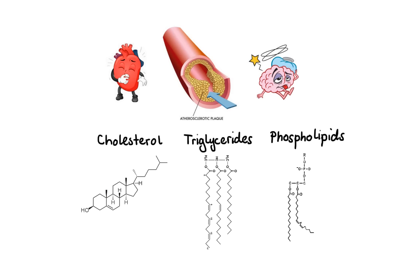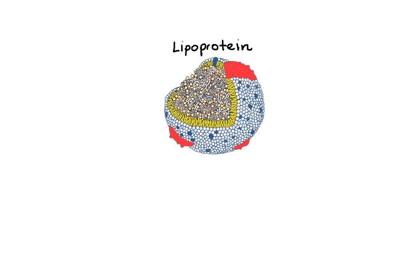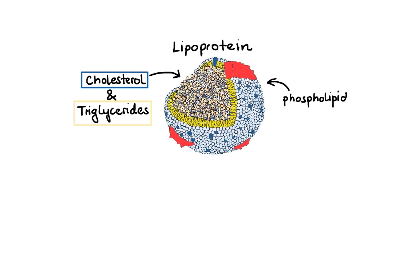Because these lipids are insoluble in blood plasma, they have to be transported throughout the body in a protein capsule known as lipoprotein. Lipoproteins consist of a hydrophobic core made of cholesterol and triglycerides, surrounded by a hydrophilic shell made of phospholipids and apolipoproteins. These apolipoproteins are specialized proteins that can control enzymes in lipoprotein metabolism and serve as ligands for lipoprotein receptors.